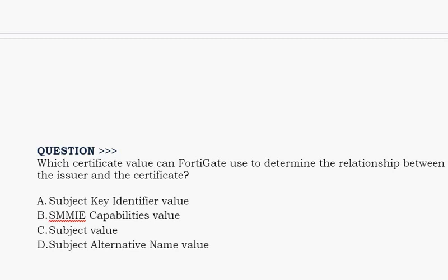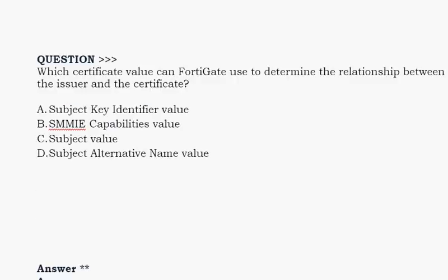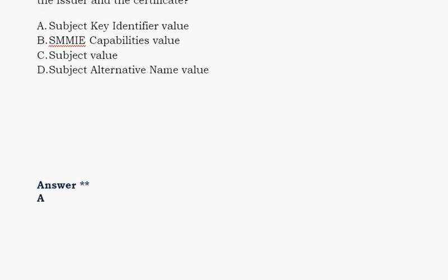Next question: Which certificate value can FortiGate use to determine the relationship between the issuer and the certificate? Option A: subject key identifier value. Option B: S/MIME capabilities value. Option C: subject value. Option D: subject alternative name value. The correct answer is Option A.